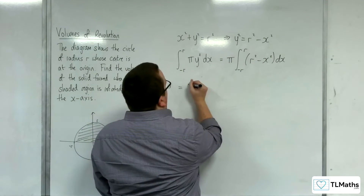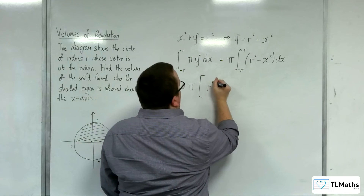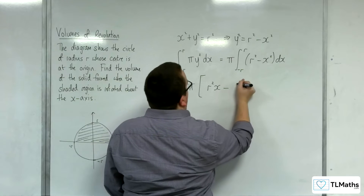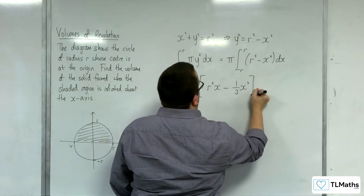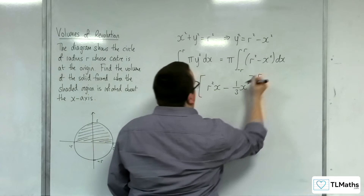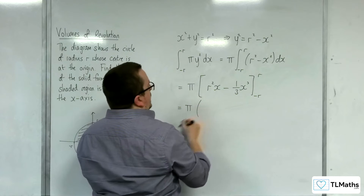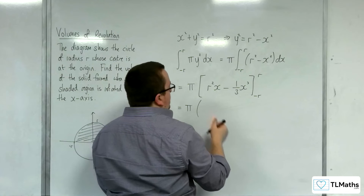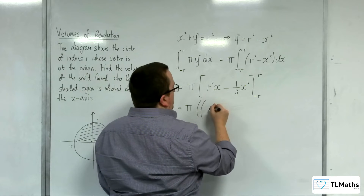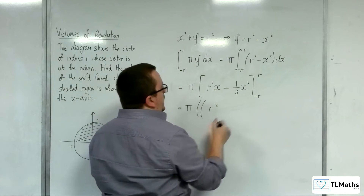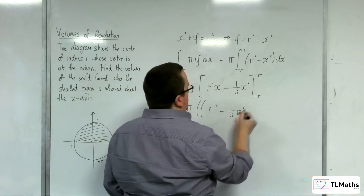So we have pi times r squared x minus one third x cubed, evaluated between minus r and r. Substituting the upper limit r first, we get r squared times r, which is r cubed, minus one third r cubed.